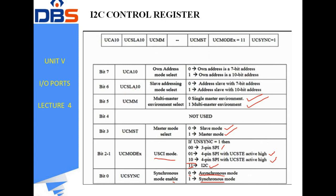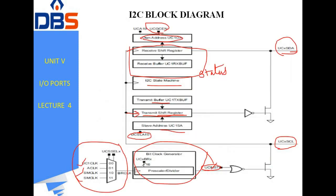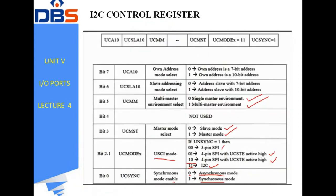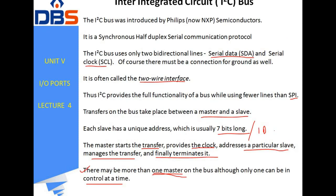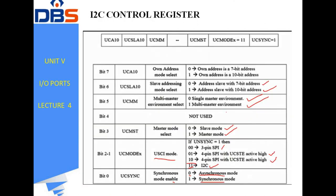Bit 6 (UCSLA10) is the slave address mode: if zero, seven-bit address mode is selected; if one, ten-bit address mode is selected. Bit 7 (UA10) is the own address mode select: zero selects seven-bit, one selects ten-bit address line. This concludes the I²C protocol. Thank you.